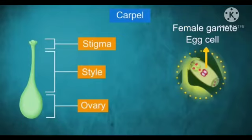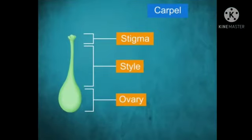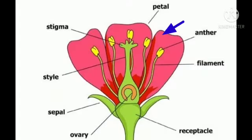The upper portion of the pistil is called the style. The style has on its tip a sticky end called the stigma.